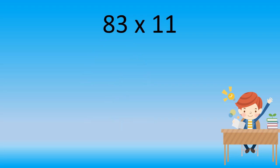83 multiplied by 11. We have to write 8, 3, add them up and write the answer in between. Now here we got 2-digit numbers. In such cases, what we have to do is add the first digit with 8.